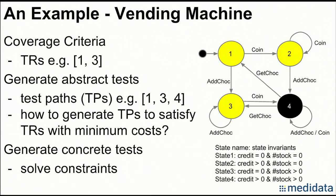We can apply various coverage criteria to this model. For instance, if we use node coverage, all states have to be covered in tests. If we use edge coverage, all transitions have to be covered. If we use more complicated coverage criteria, the test requirements may be a set of sub-paths with various lengths. The problem is: how should we generate test paths to cover all test requirements with minimum costs? Costs can be defined in terms of the total number of test paths, the total number of nodes in the tests, etc. This problem is proved to be NP-complete. For more details, you can read my ICST 2012 paper and my dissertation.